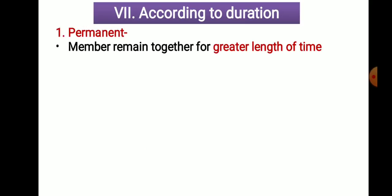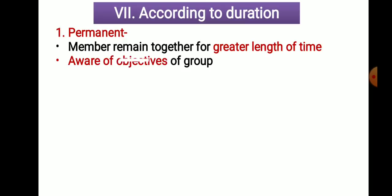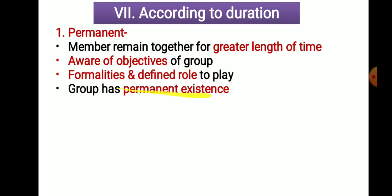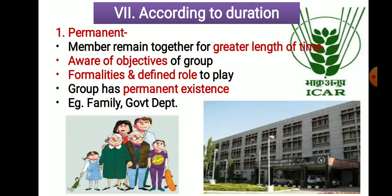According to duration — how long a group exists in society — the first type is permanent. Members remain together for a greater length of time, lifelong. They are aware of the group's objectives, different roles are defined, and the tasks members must perform are already established. The group has permanent existence in society. Examples are family and government departments — even though members may change, family and government departments remain as they are.